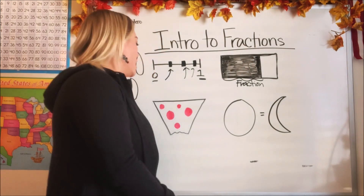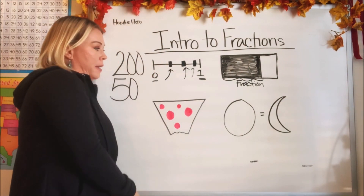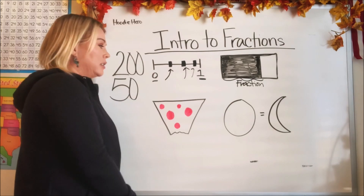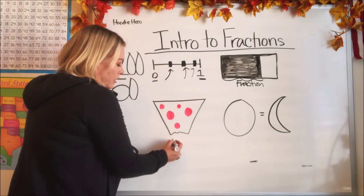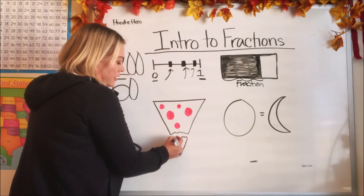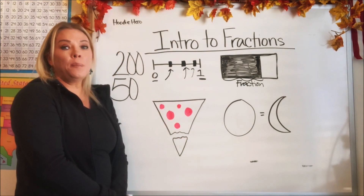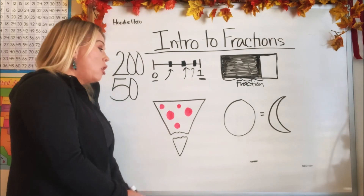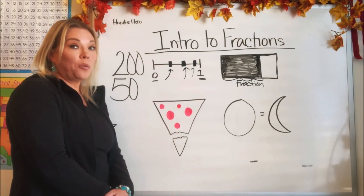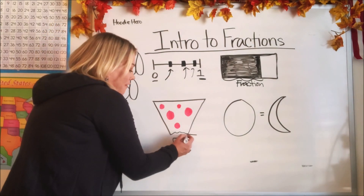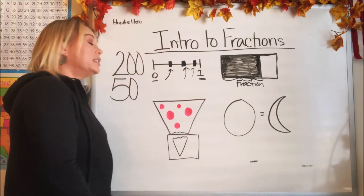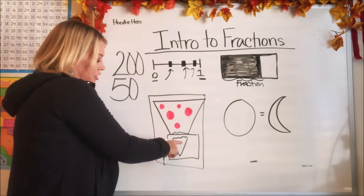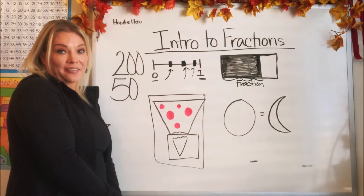Let's look at my third example. I have a piece of pepperoni pizza. It's missing part of the bottom. So if you ate that bottom part and told your mom, 'Mom, I'm done, I ate the pepperoni pizza,' and she says, 'Did you eat the whole pepperoni pizza or just a fraction of it?' — you just ate a fraction of it, because to honestly say you ate the whole pizza, you would have to eat the whole thing. This is just a fraction of the pepperoni pizza.